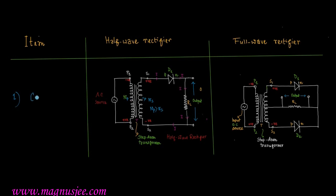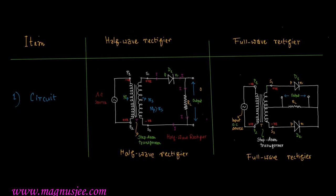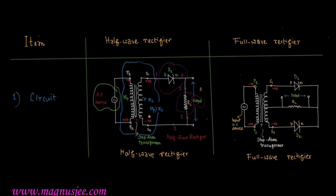We have to compare between half wave rectifier and full wave rectifier. Circuit diagrams of both are shown. The half wave rectifier contains one semiconductor diode. This is an AC source connected to a step-down transformer. D1 is the semiconductor diode, and output is measured across the load resistance RL.